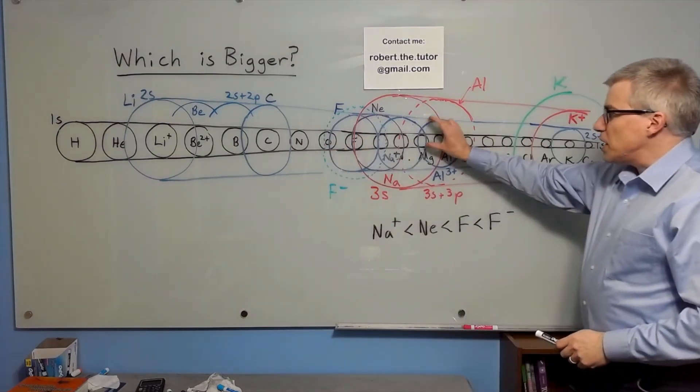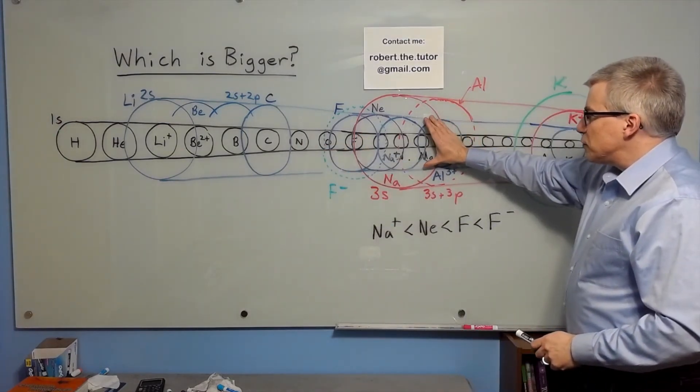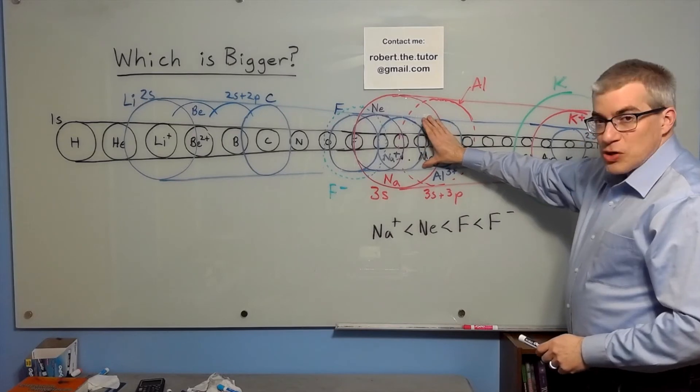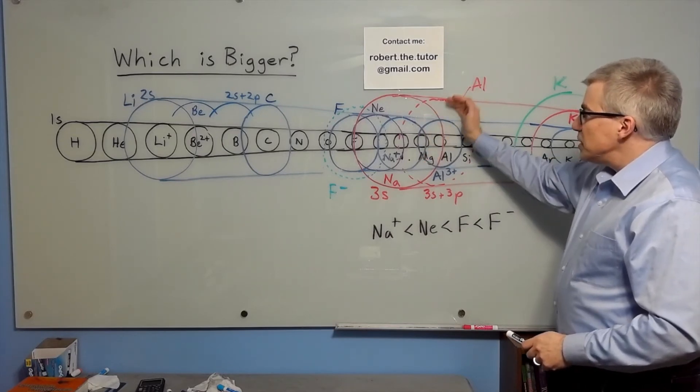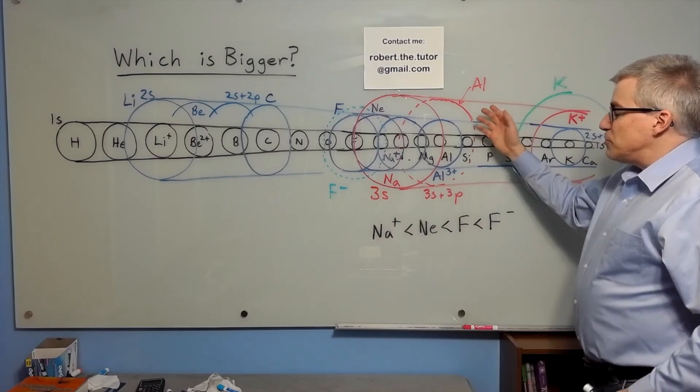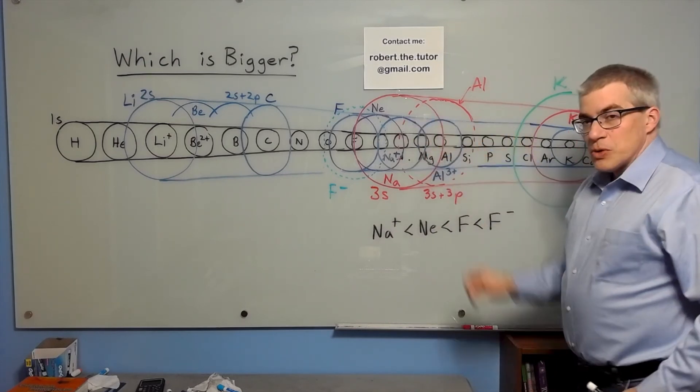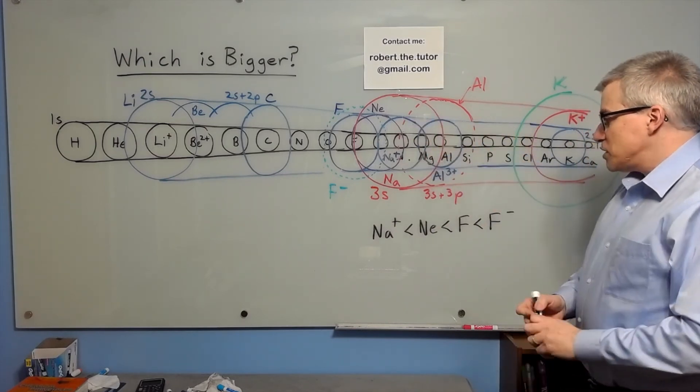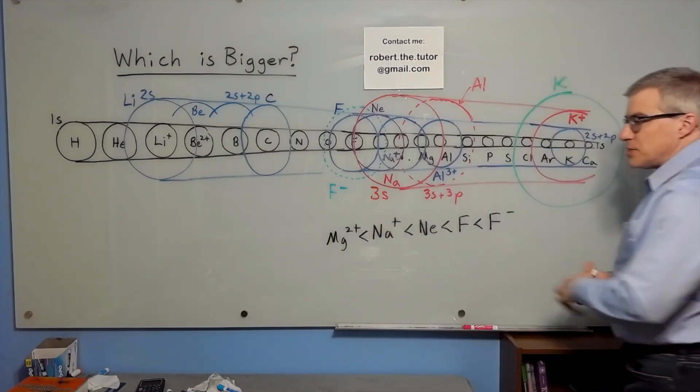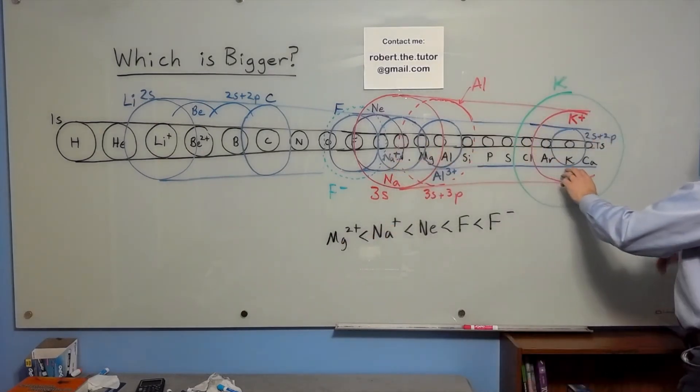So magnesium 2 plus would simply have the 1s and the 2s full. If you have magnesium, it goes all the way out to the red. But if you have Mg2+, it's confined to the blue. And so Mg2+ would be even smaller. And this pattern repeats when you get to potassium.